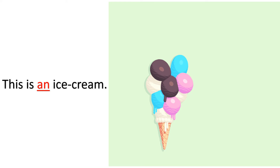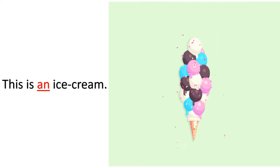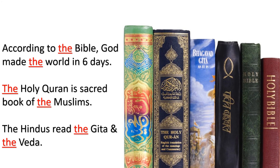'This is an ice cream.' 'The' is used before holy books, religious texts, and religions. Example: 'According to the Bible, God made the world in six days.' 'The Holy Quran is a sacred book of the Muslims. The Hindus read the Gita and the Veda.'